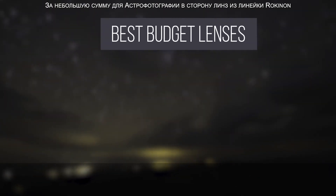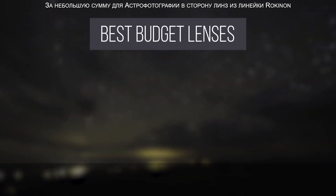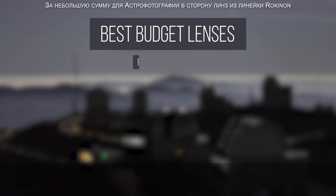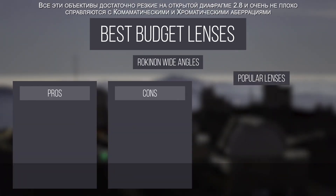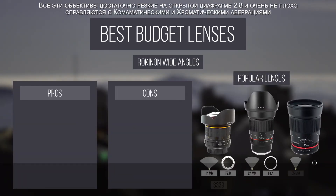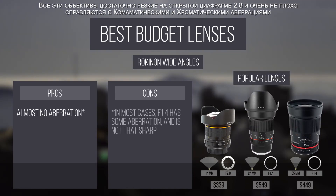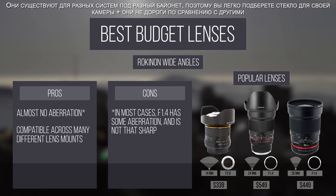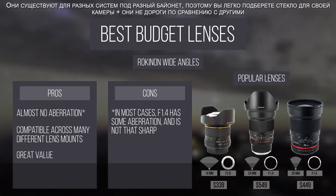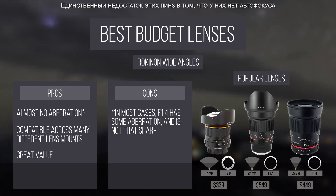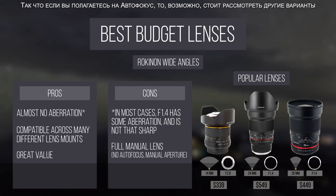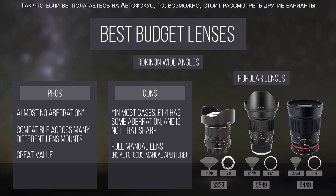For a great budget astrophotography lens, I recommend the lenses from the Rokinon lineup. All of these lenses are reasonably sharp at f/2.8 and control chromatic aberrations very well. They come in lots of varieties to fit your camera's lens mount and are cheap compared to others on this list. The only downside is that they have no autofocus, so if you rely on that, maybe consider other lenses.